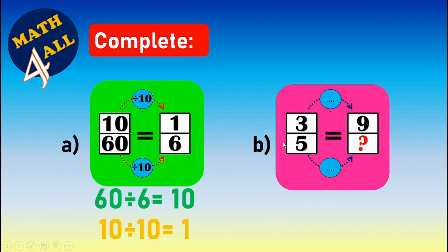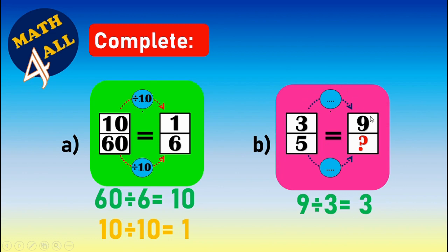For example B, we have a missing denominator. Step one: divide the two opposite numbers — nine divided by three equals three, so I will use three in the rule. Step two: is the fraction increasing or decreasing? It is increasing, so I will multiply by three. Three times three equals nine, and five times three equals fifteen. So the missing denominator is fifteen.